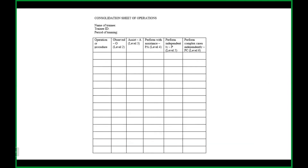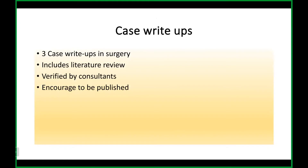These are examples of your consolidation sheet. A consolidation sheet is basically a summary of how many cases you've done without patient names or IDs — just the number of cases, what cases, and how many at whichever complexity level. You're supposed to have three case write-ups in surgery, complete with literature review, and these should be verified and signed by consultants. At the moment, it is encouraged to publish but not compulsory.